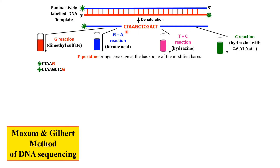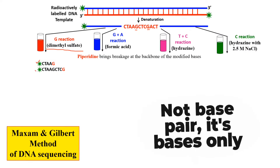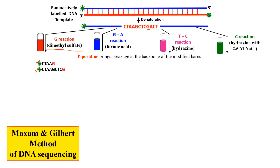In the guanine reaction, the guanine residues in the template molecule are modified by dimethyl sulfate. As a result, we obtain fragments corresponding to each guanine position. For example, the first fragment corresponds to CTAAG — because G was modified and broken by piperidine, giving us a fragment of 5 base pairs. Similarly, the second fragment is CTAAGCTCG, cut at the next guanine position.